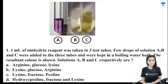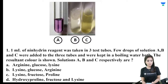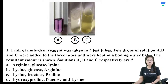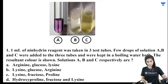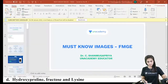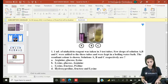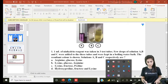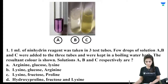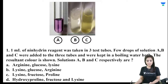The first question is about the ninhydrin test. Ninhydrin reagent was taken in three test tubes. Solutions A, B, and C were added to ninhydrin reagent and kept in a boiling water bath. The resultant colors are shown. What is solution A, what is solution B, and what is solution C?